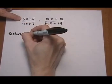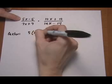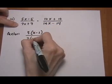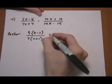Take out a 5 on the first numerator, times X minus 1. Take out a 7, times X plus 1. So those are GCF factorings.